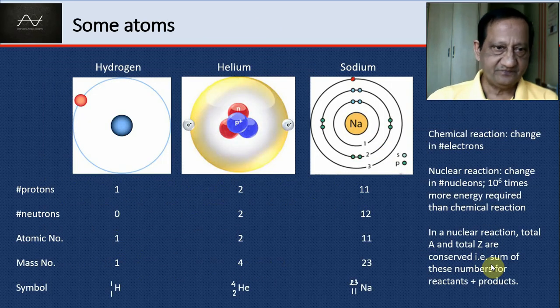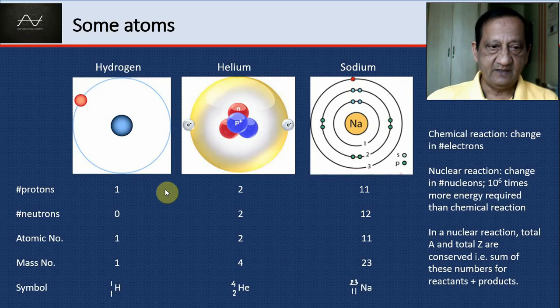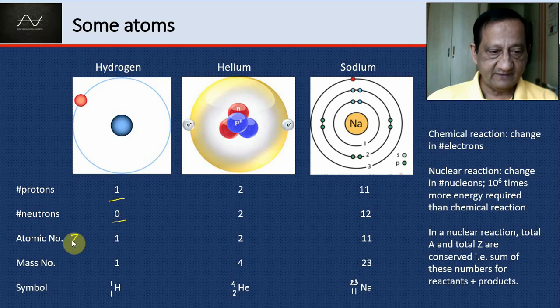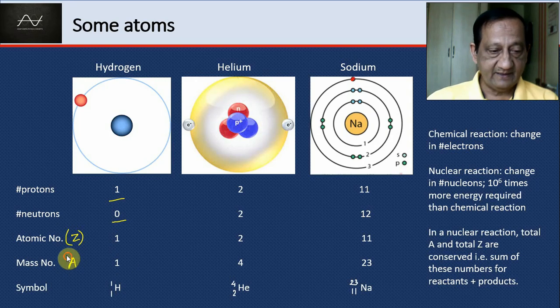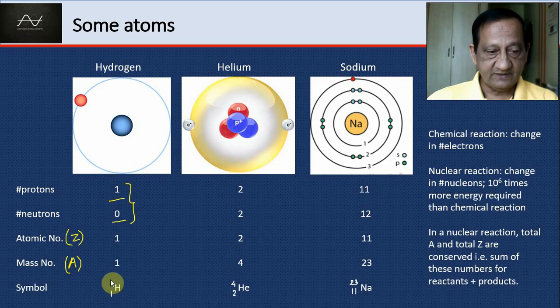Let's look at some atoms—hydrogen, helium, and sodium. Hydrogen is the simplest atom. The nucleus consists of a single proton, no neutrons. The atomic number Z is 1, and the mass number A is 1. So we write it as 1, 1, H.